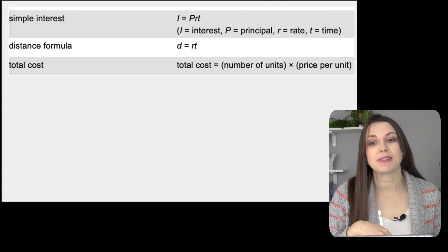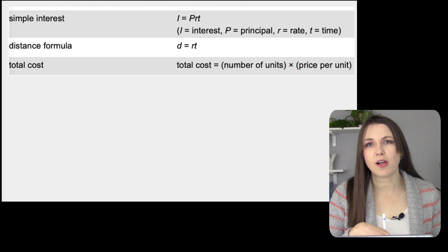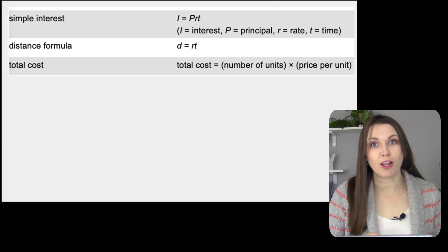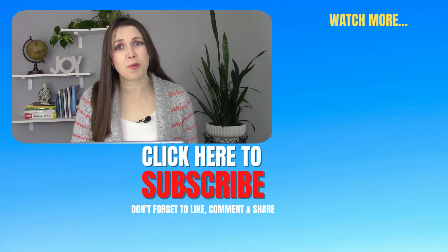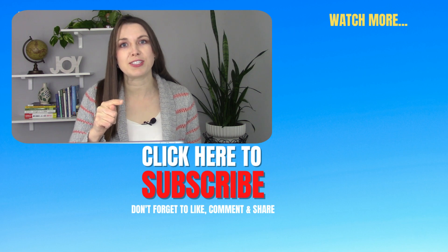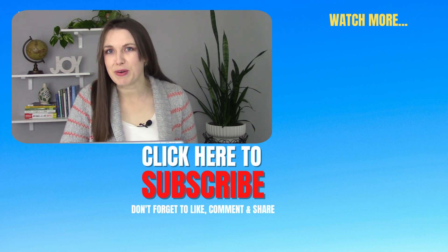Distance is simply rate times time. And total cost is number of units times the price per unit — if each candy bar is $1 and I buy 10, that's $10. And that, my friends, is the formula sheet for the GED. It takes practice, so now that you're a little familiar with it, check out those other videos and practice, practice, practice. A lot of people find the math test to be one of the trickier tests, but I have full faith that if you work really hard you can do this. Believe in yourself, and I'll catch you in the next video. Peace, friends.